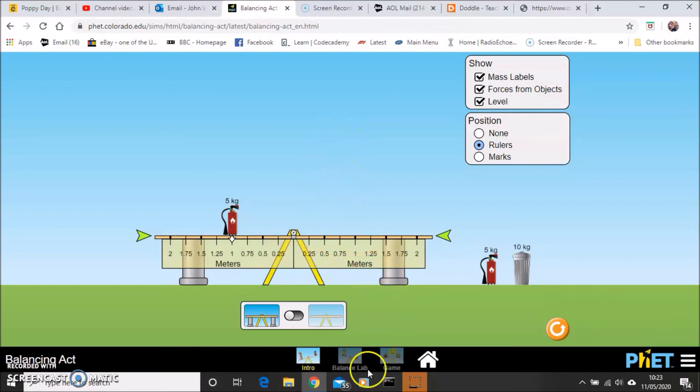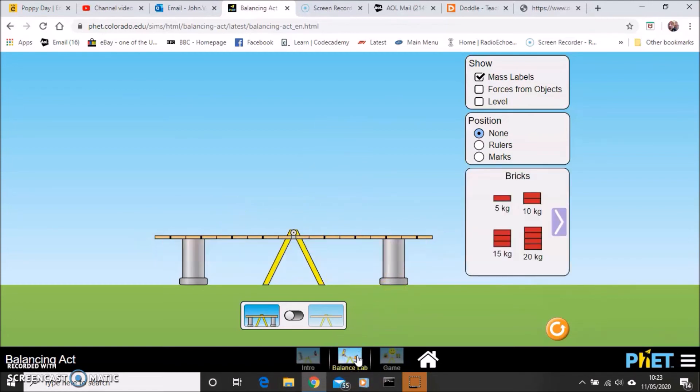So that's just the little intro bit. If you then go to balance lab, that then will allow you to explore making things balanced. So for example, here I've got five kilograms of mass, 50 newtons. If I place that one meter from the pivot, so I've got a force of 50 newtons, one meter from the pivot. We know the equation force times distance from pivot. So the moment is going to be 50 times one, which would be 50 newton meters.